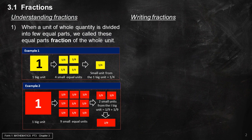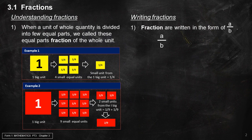Writing fractions: Fractions are written in the form of A over B, where A is called the numerator and B is the denominator.